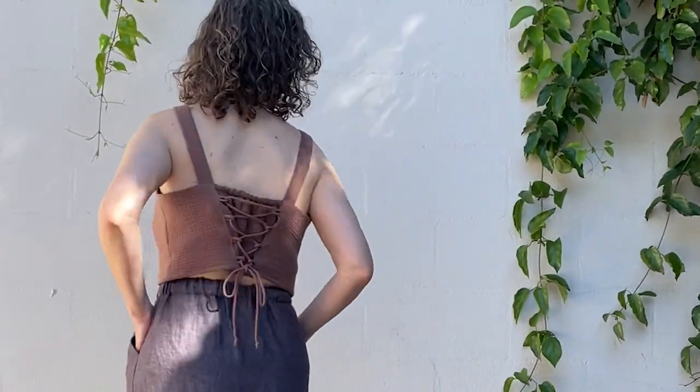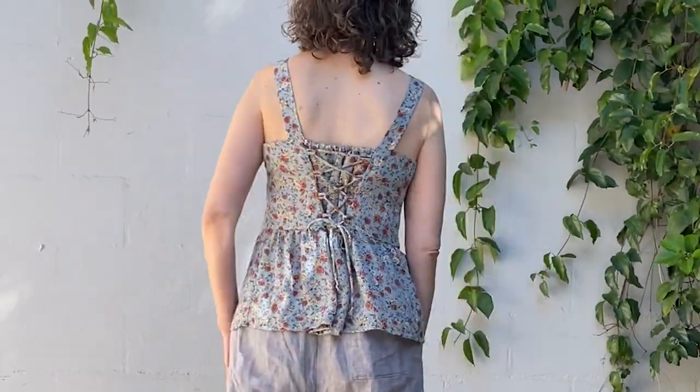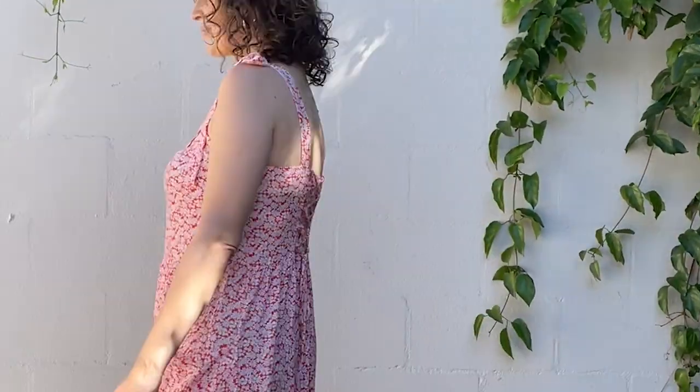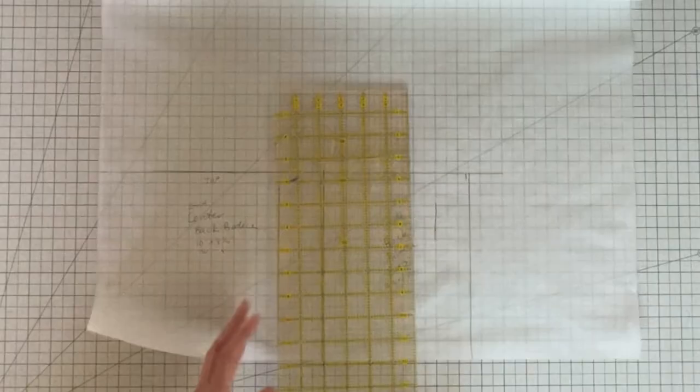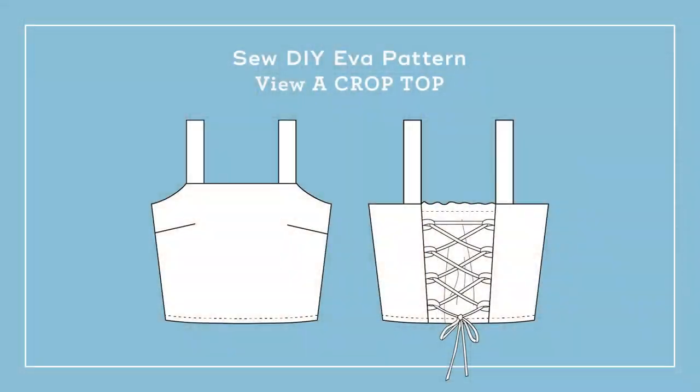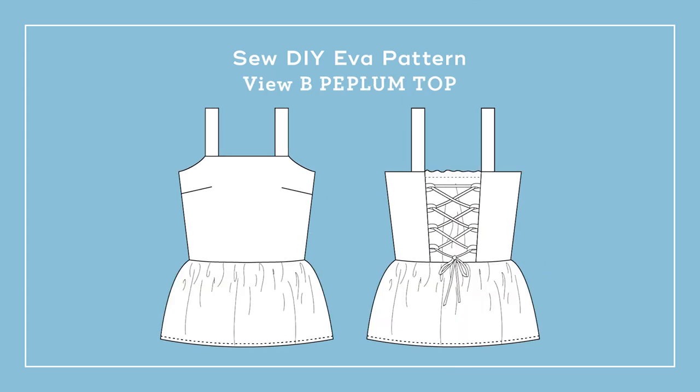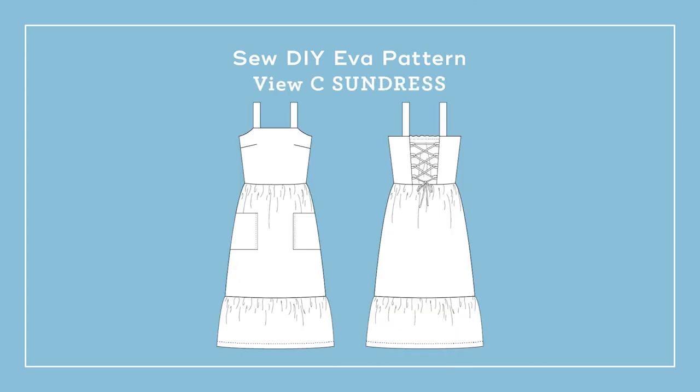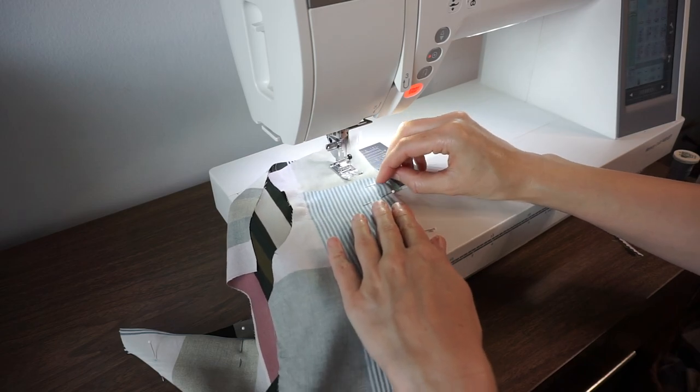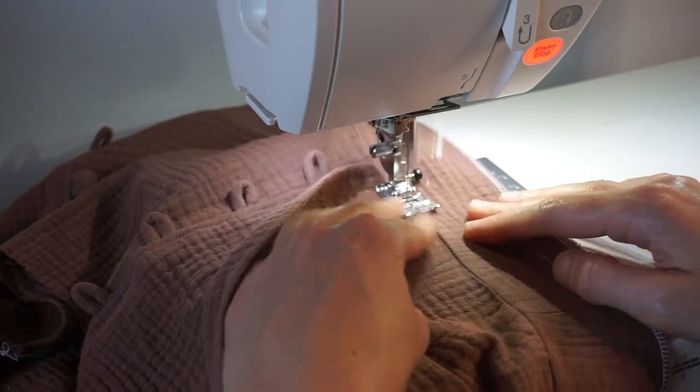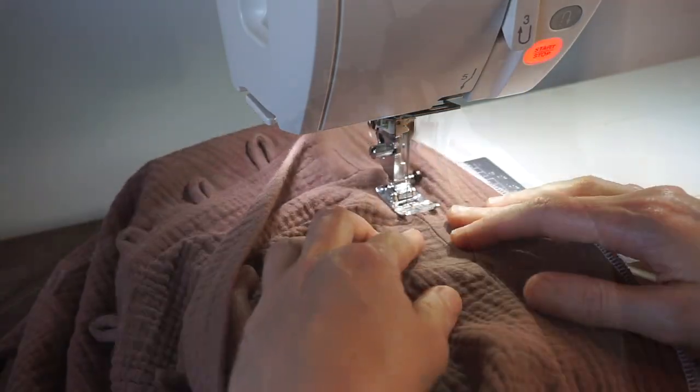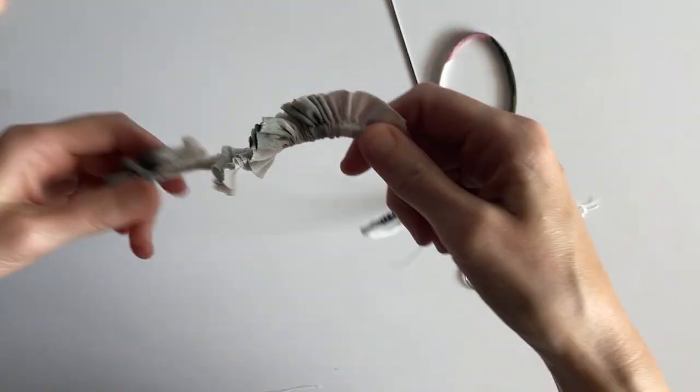Hello and welcome to day three of the Eva Pattern Sew Along. My name is Beth and I'm the sewing pattern designer and blogger at SewDIY. The Eva pattern is our newest pattern—a hybrid between a traditional and a zero waste pattern that includes a crop top, a peplum top, and a sundress. In today's video we're going to sew the entire bodice, including the front, the back, and the straps. If you want to skip ahead to a different part, there are timestamps down in the description box. Let's get started.